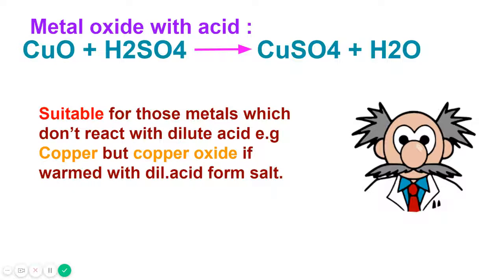We must add excess copper oxide to the warm sulfuric acid so that all the acid is neutralized. The unreacted oxide is then removed by filtering. The filtrate is the blue solution of copper sulfate and the crystals are obtained by concentrating the solution by evaporation and then leaving it to cool. The crystals formed are removed by filtration.